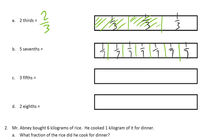Five-sevenths means I have to label each one of these as one-seventh. And I have to shade in five of these, because five of the sevenths — two, three, four, five. And that's what five-sevenths should look like.